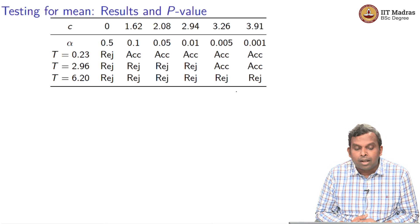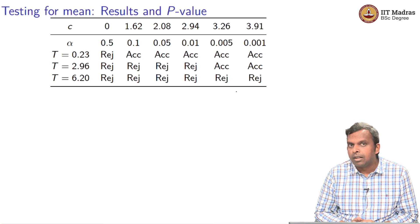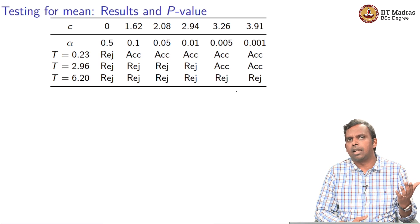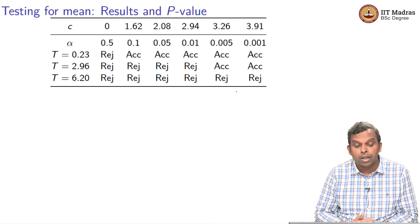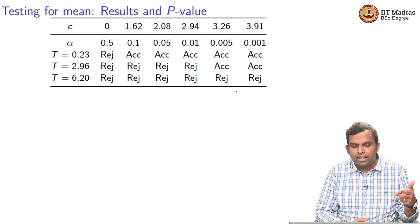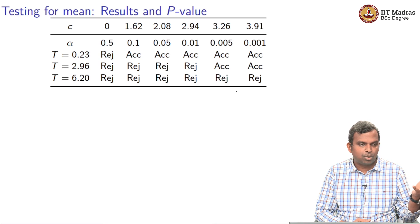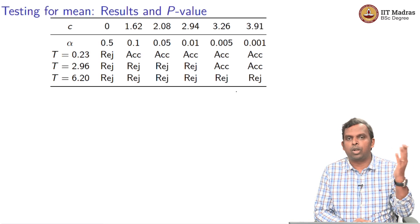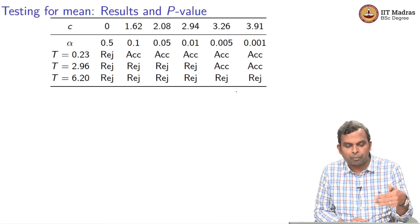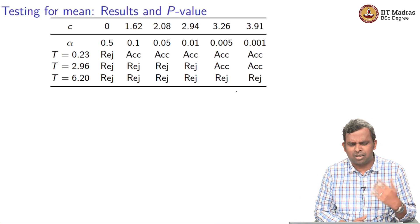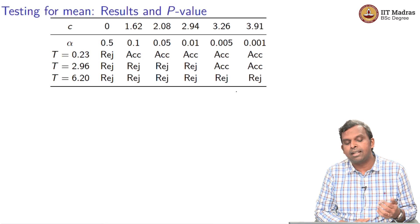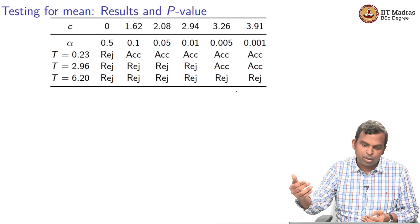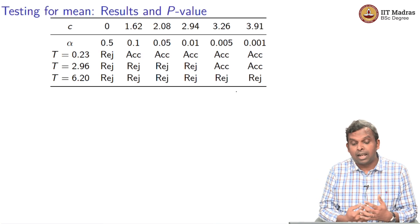The basic idea is: supposing you decide a significance level that tells you the critical value and you have a test — if T is greater than C, you reject the null. You will get different values of T from different samples. For instance, T might be 0.23, then you compare with the critical value and reject or accept. I have made a table for different values: 0.23, 2.96, 6.20 — and depending on the significance level and critical value, you may accept or reject the null hypothesis.